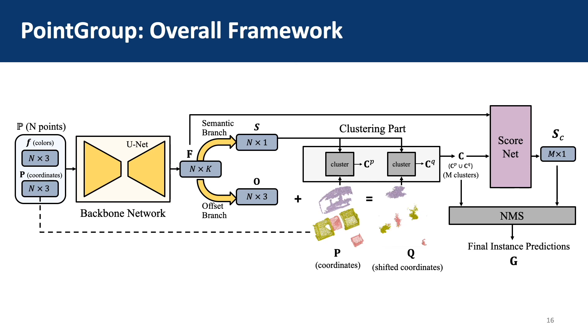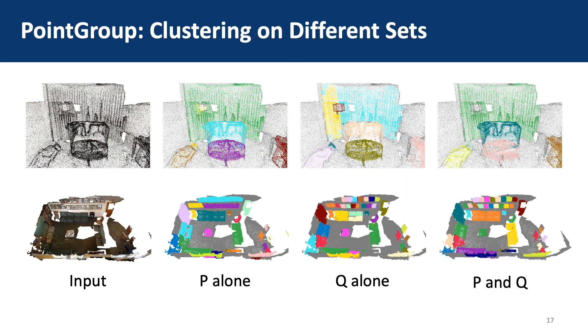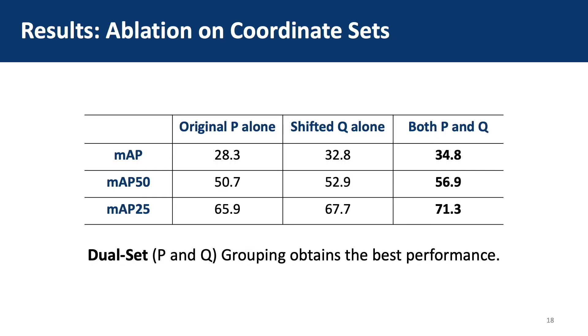This is the whole framework of our PointGroup. Here is the visualization comparison between clustering on P, on Q, and on dual sets. Clustering on both P and Q makes use of the complementary properties of the two sets and thus performs best. The quantitative results also show the effectiveness of clustering on dual sets.